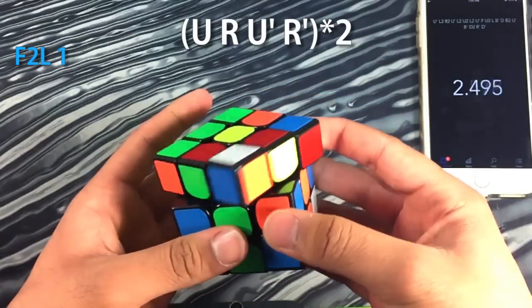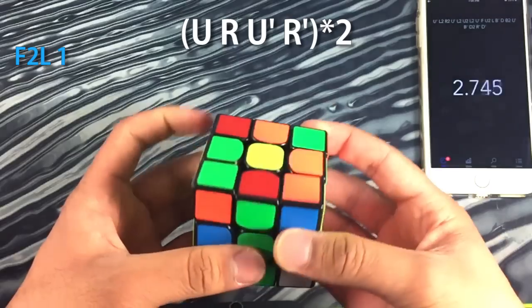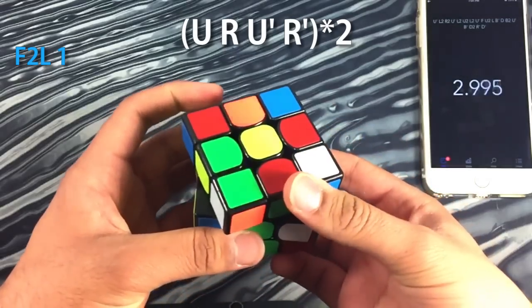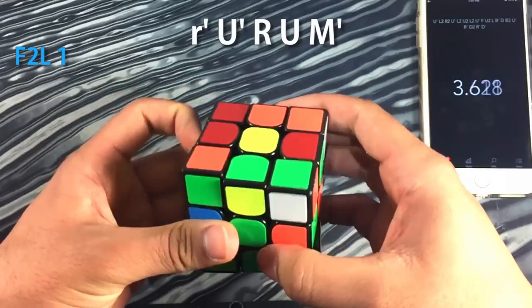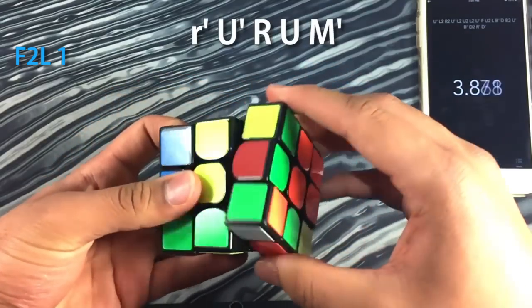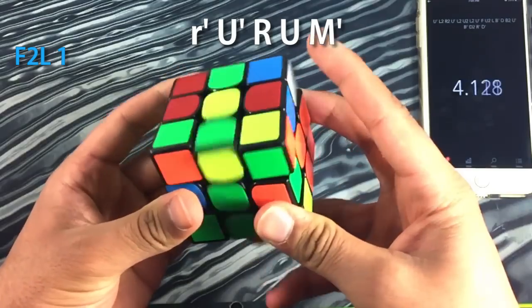Anyways and then I found the blue and orange pair and it was also a similar case to what we had in the first solve I think so I did a quick trigger to solve that. So I solved the pair and inserted it into the back right position using that very handy algorithm that I also recommend learning.